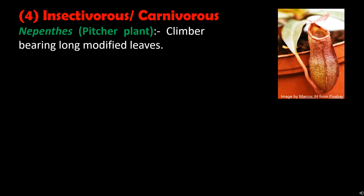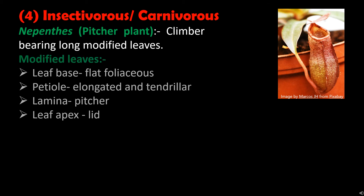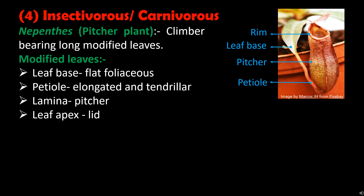The fourth type of heterotrophic plants are insectivorous plants. These plants eat insects — that is why they are also called carnivorous plants. The most common example is Nepenthes, also called the pitcher plant. These plants are climbers bearing long modified leaves. In the leaf modification, the leaf base becomes flat and foliaceous, the petiole becomes elongated and tendrillar, the lamina of the leaf becomes the pitcher, and the leaf apex becomes the lid of the pitcher, which protects it from rainfall.